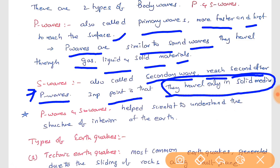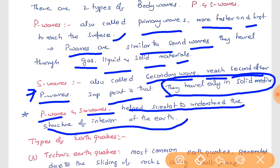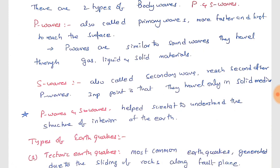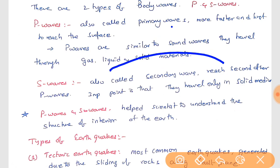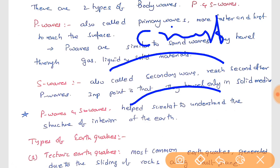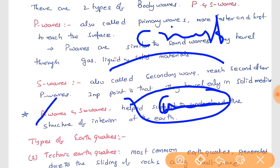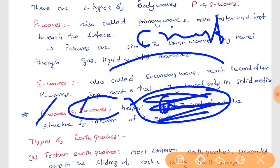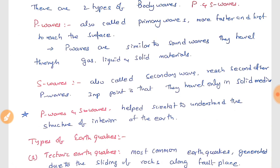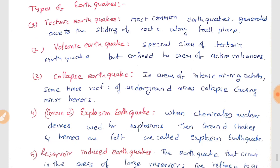P waves and S waves help scientists understand the structure of the interior of the earth. Using primary and secondary waves, scientists found the demarcations of the discontinuities — identifying where the crust ends, where the mantle begins, and where the asthenosphere is located. Because S waves can't travel through liquid, wherever they stop, scientists infer there is a liquid layer, and this strategy helped find the discontinuities in the internal structure of the earth.